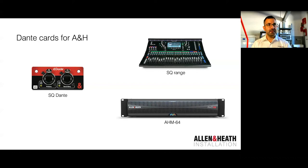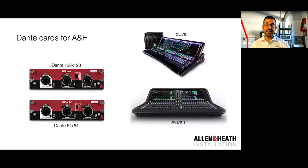The next Dante cards are the Dante 128 and Dante 64 cards for DLive and Avantis. Pretty much the same specs — they run at 96kHz or 48kHz with onboard sample rate conversion. This allows us to integrate DLive and Avantis into the Everything IO Dante boxes, but also into any other Dante devices you might want to use in your network.